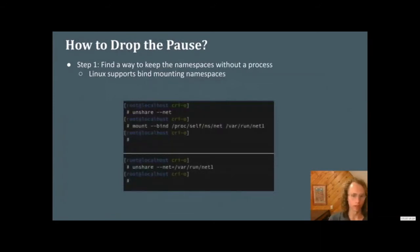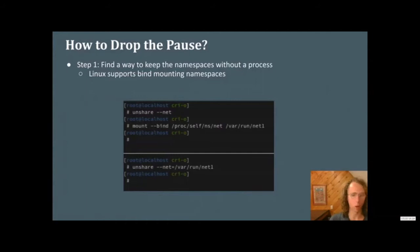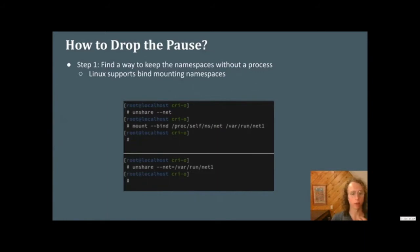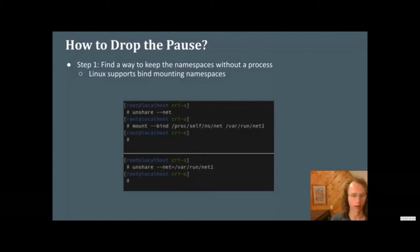So how would we go about dropping the pause container? The first thing you need to do is find a way to keep namespaces without an associated process. Luckily, Linux supports this out of the box — we can bind mount namespaces. In this first line, we have `unshare --net`, which means create a new namespace and jump into it. Then `mount --bind /proc/self/ns/net` to a specified path. That's saying mount my personal namespace to the specified location. Then in a second terminal we can enter that namespace by referencing the mounted path.